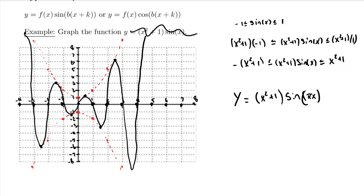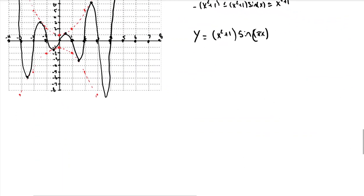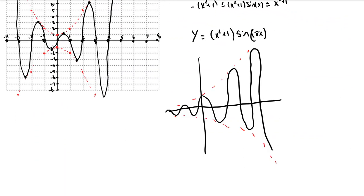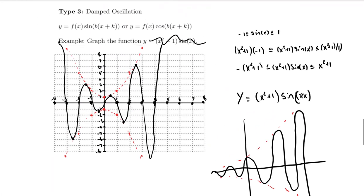Other instances you might see of damping graphs could be the following. So this would be an example where the dampening is occurring as x is going towards negative infinity. So nice limits if you want. But there's lots of different ways you can experience damping and lots of different ways you can see these types of graphs.